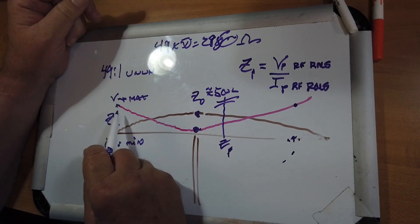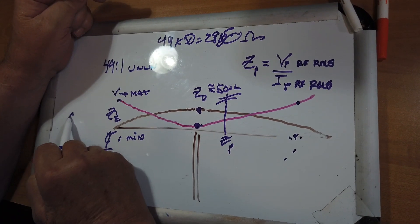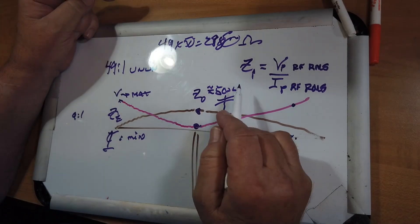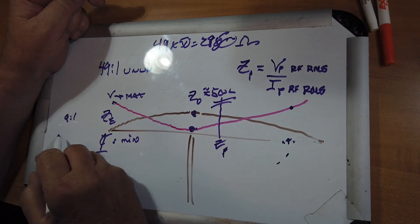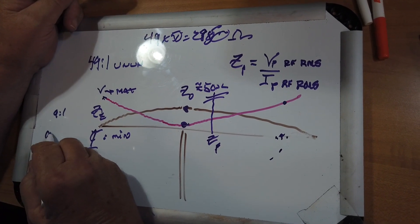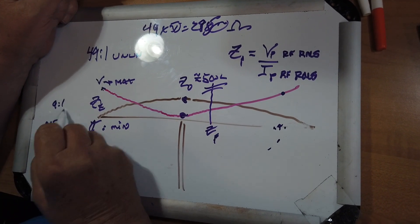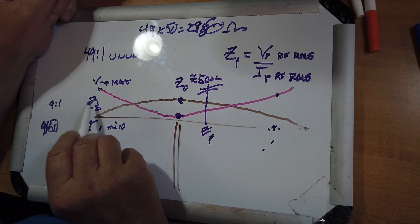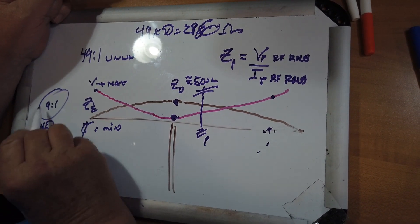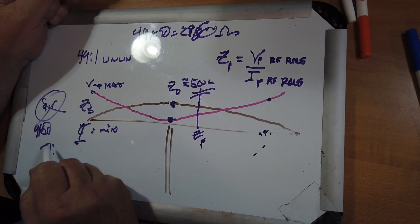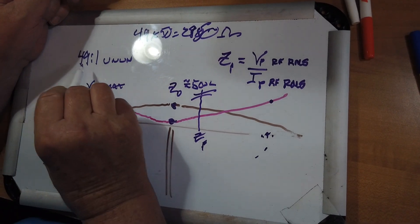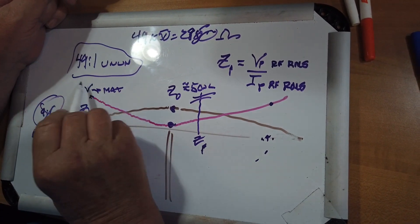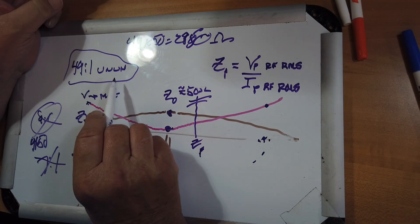And you can feed that. I will tell you that if you use just a 9 to 1 balun, you're assuming this is about 450 ohms, and that's much higher than that. I wouldn't use a 9 to 1. I wouldn't use a 7 to 1. I would use a 49 to 1.